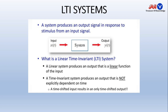What is a system? A system produces an output signal in response to a stimulus from an input signal. Basically, a system always produces an output when we give an input to the system. It produces output when we give input, but we have to study LTI here.